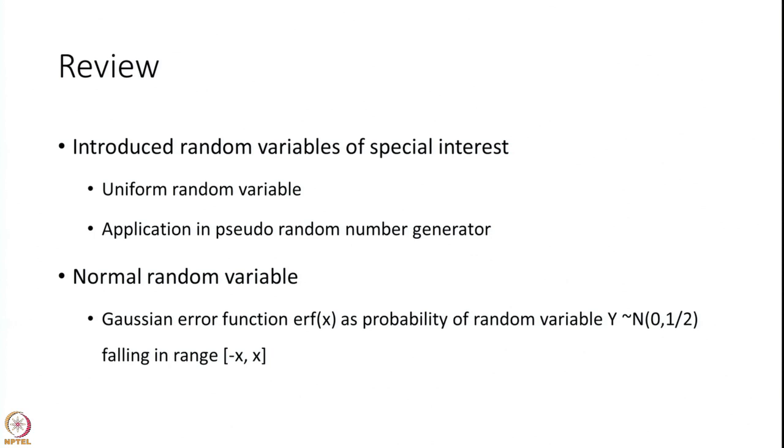Then we introduced the normal random variable. This distribution was first noticed during Galileo's time, when he was upset that under the same circumstances his students were bringing out different observations of stars and constellations. It took around 200 years for Gauss to come and say that these errors are natural to occur and have a certain distribution — what we call the normal or Gaussian distribution.